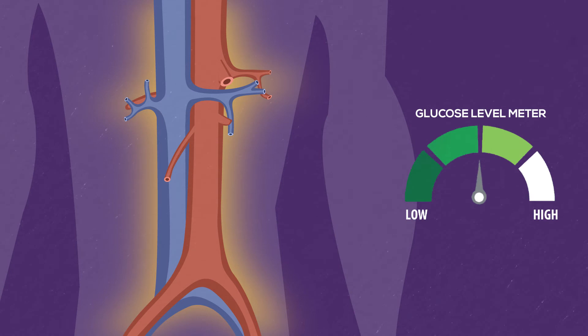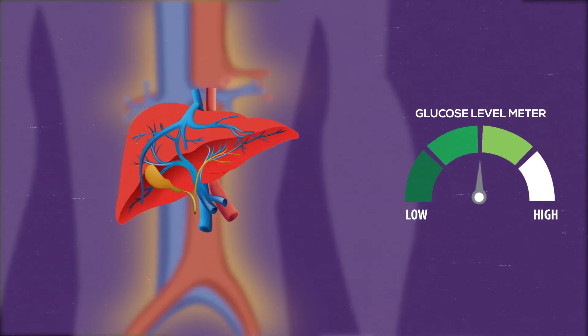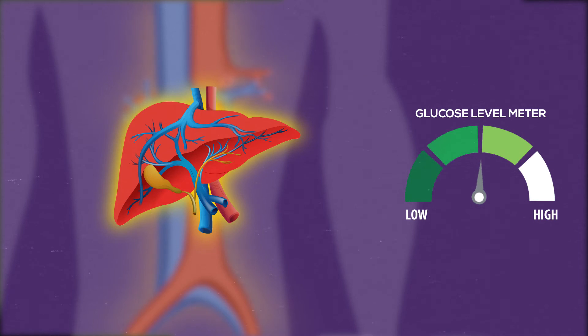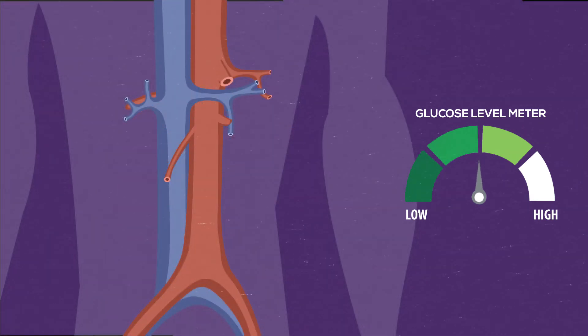When the body doesn't need to use the glucose for energy, it stores it in the liver and muscles. This is how your blood sugar levels return to normal.